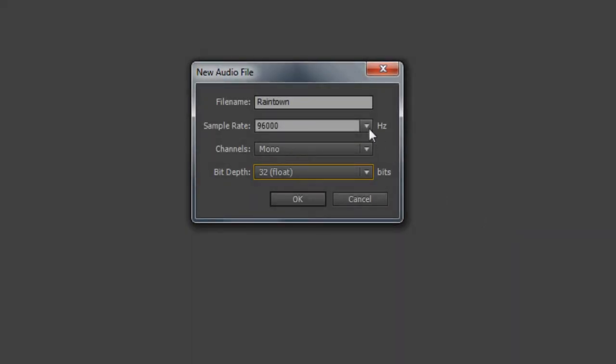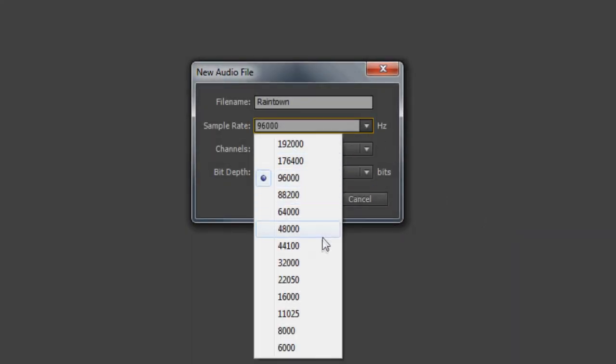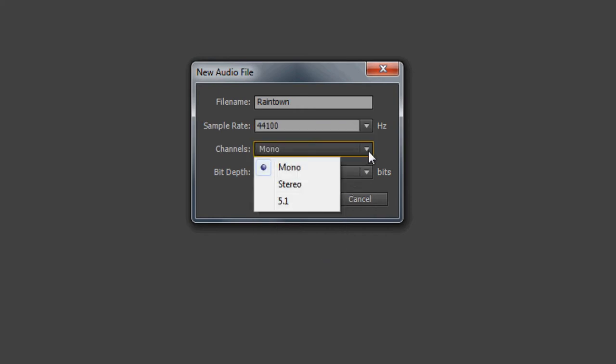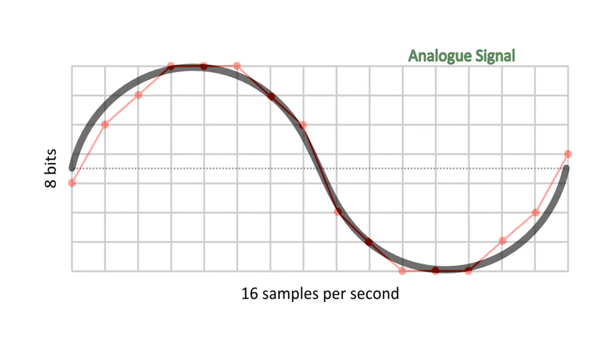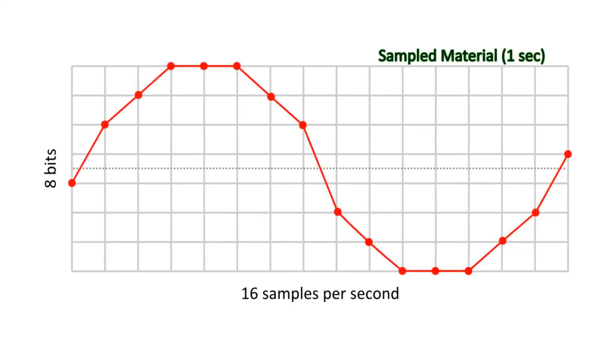There are two crucial parameters: the sample rate and bit depth. Once a sound is sampled at a certain resolution, say 44.1 kHz at 16-bit, there is no way to increase the quality simply because there is no data between the sampling points. We can only degrade it.